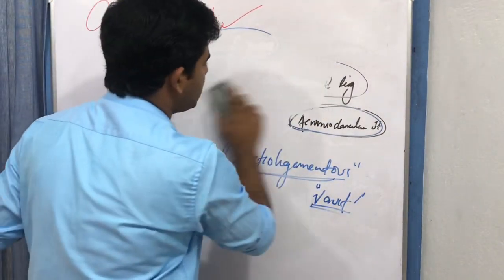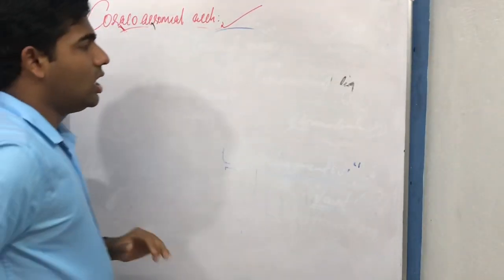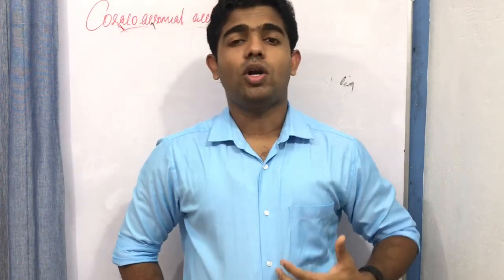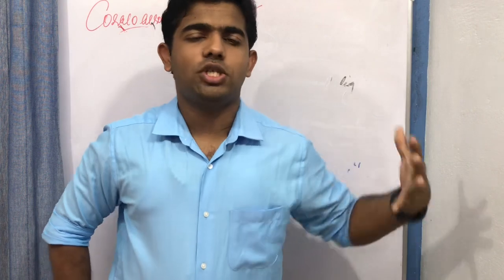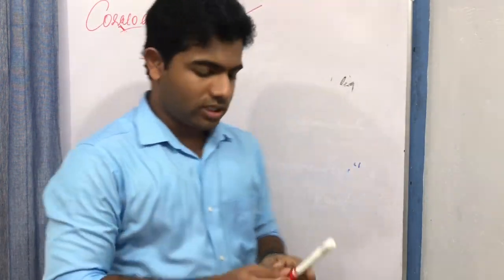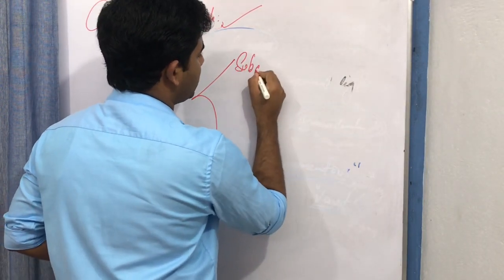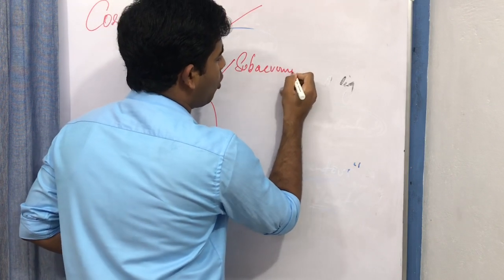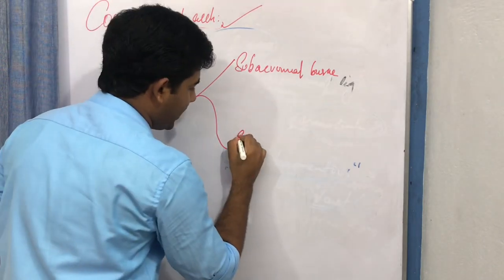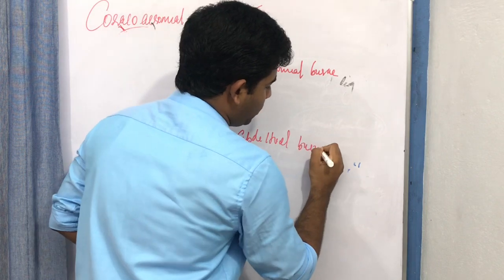Now let us move to the second topic: the bursas around the shoulder region. Given the large amount of ligamentous, bony, and functional mobility in the shoulder, there are many bursas in this region. We need to focus on two specifically: the subacromial bursa and the subdeltoid bursa.